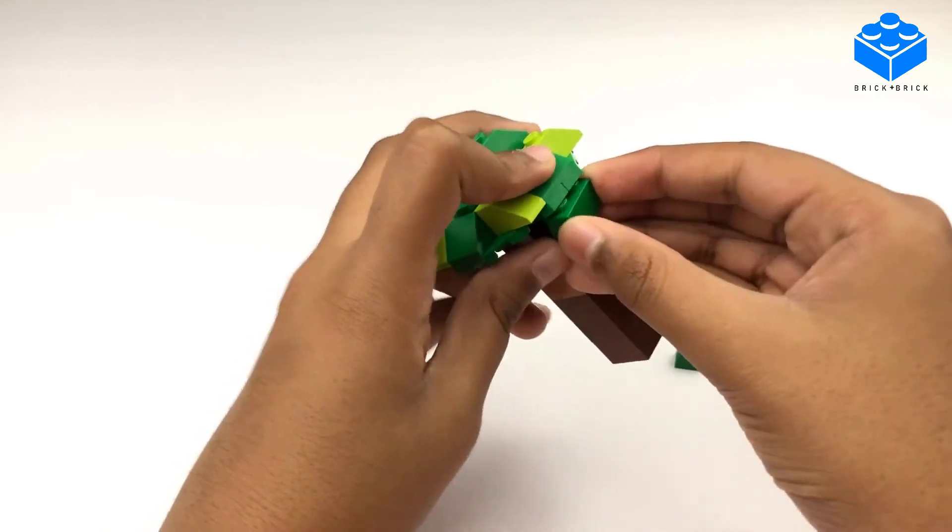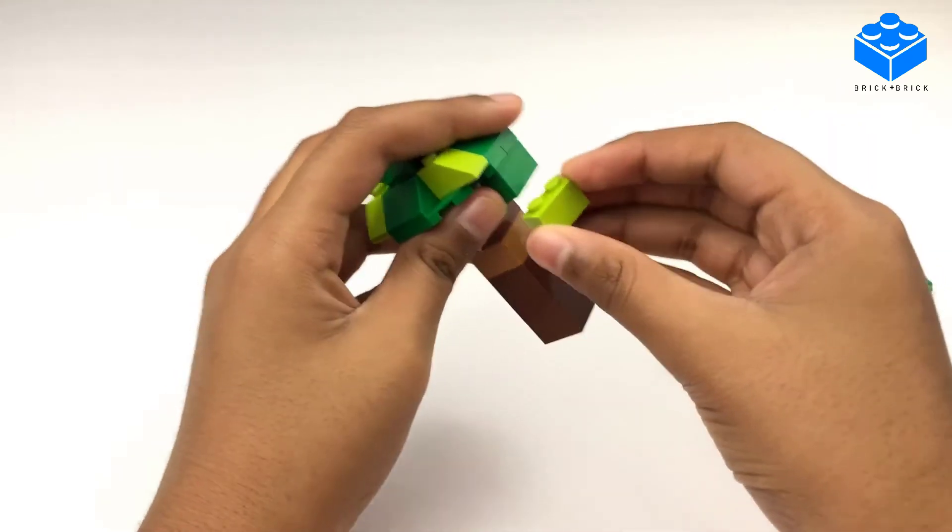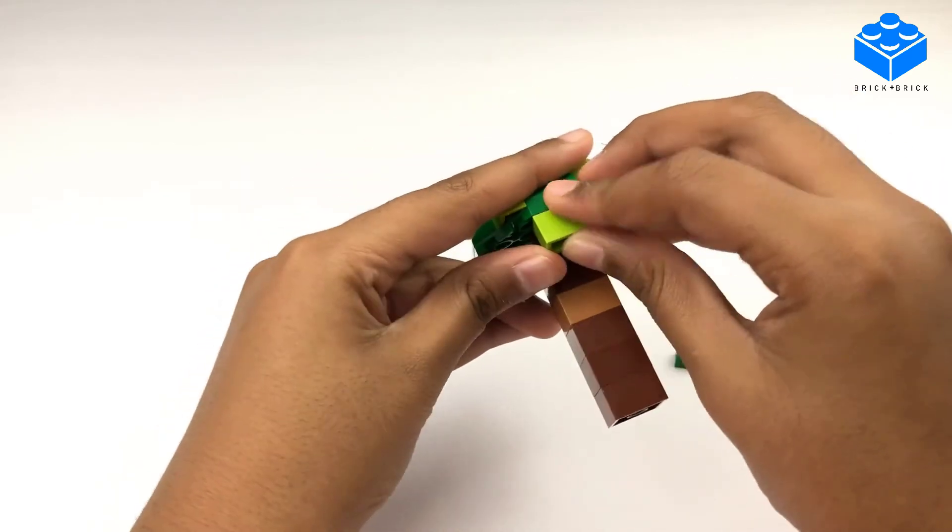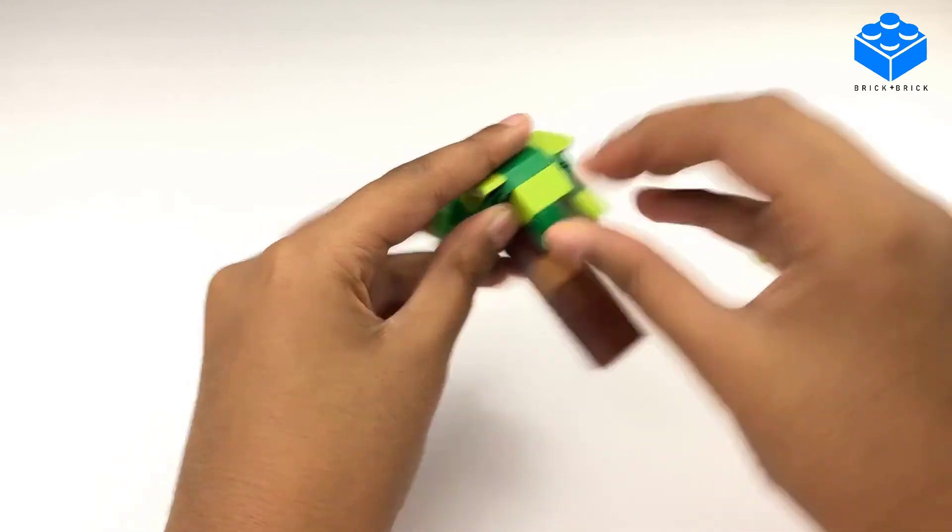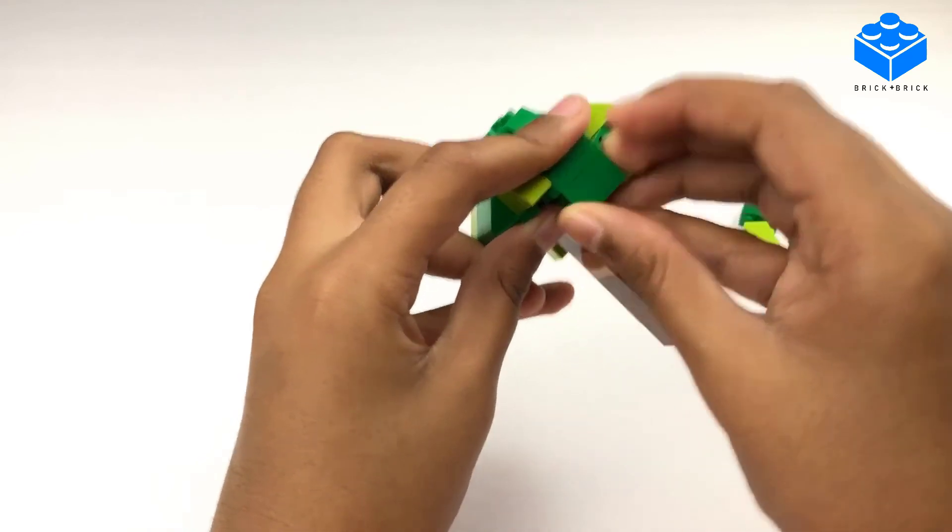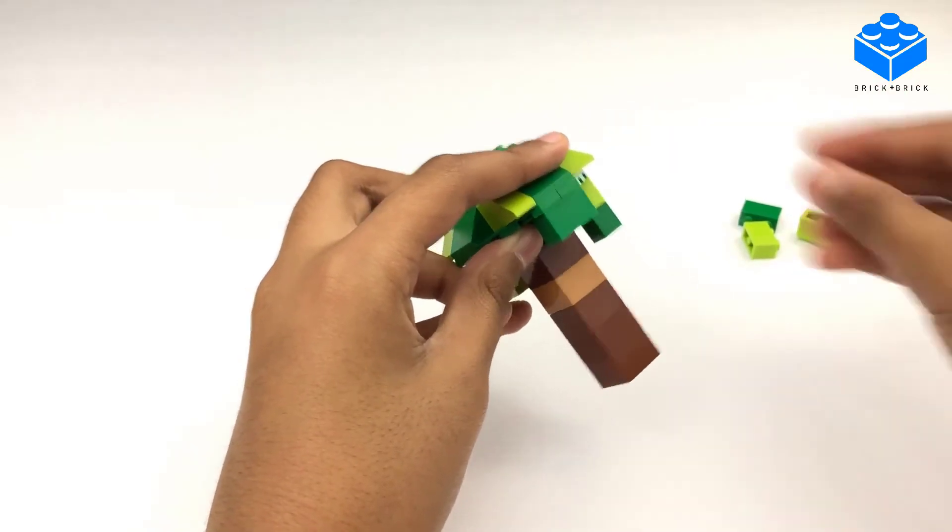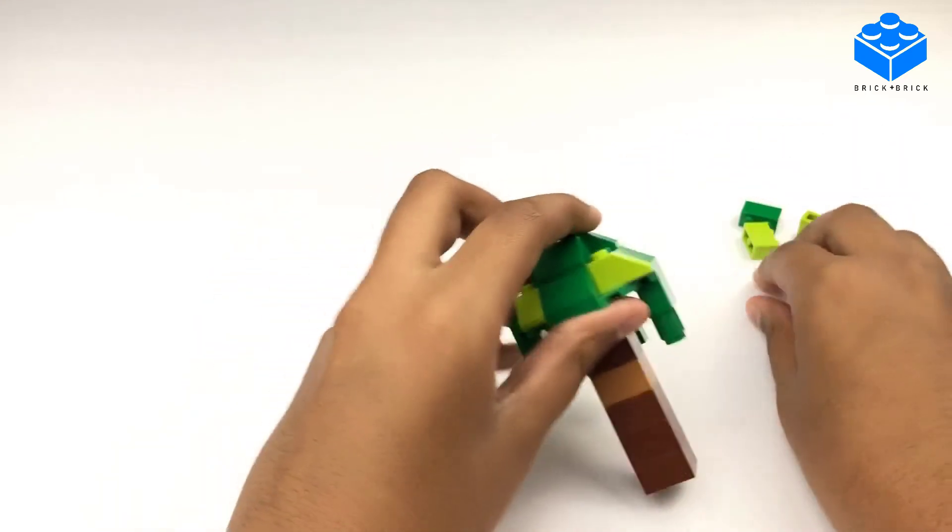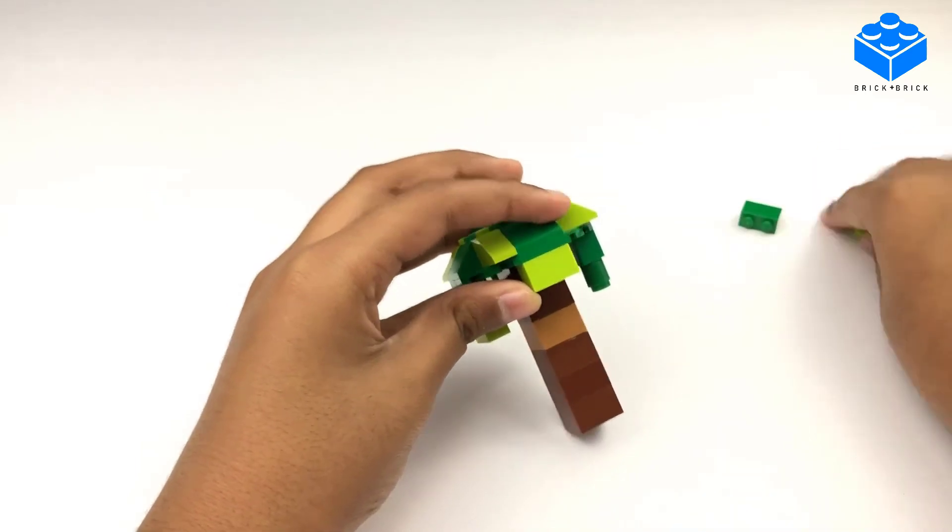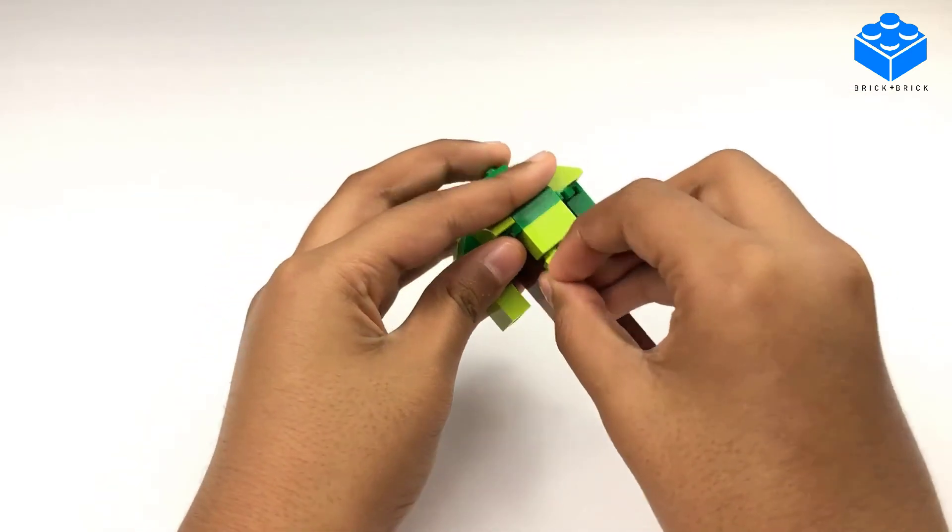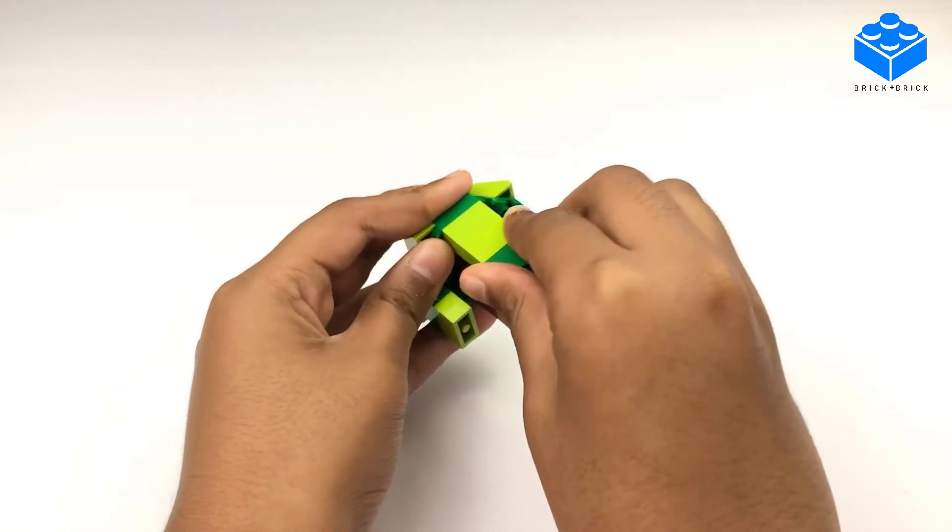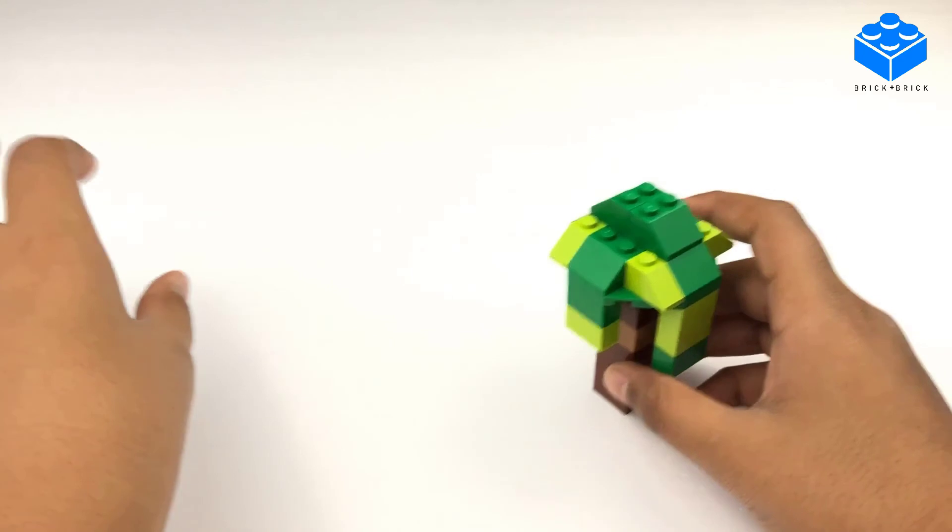Next, you can add random designs with some one by twos around your tree. Obviously, this isn't necessary. But, you can add it if you want to. And that's the last brick. And we're done with our last tree.